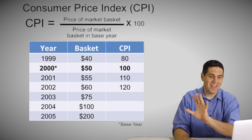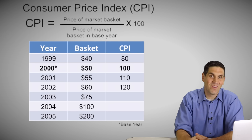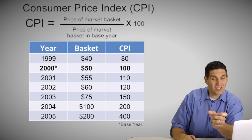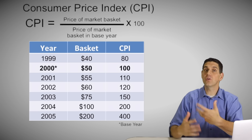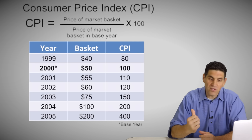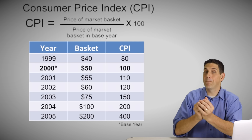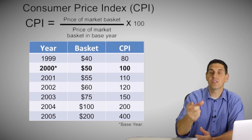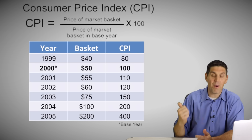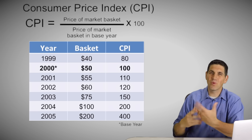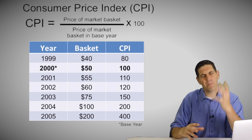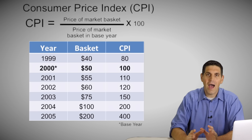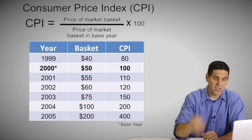These numbers are all made up — the inflation rate wasn't actually that high between those years. But now you understand how to calculate CPI. Check yourself to see if you got the right answers. You can either use the equation or use a bit of logic. For example, in 2004 the market basket is $100, but in the base year it was $50 — prices clearly doubled. So the CPI is going to be 200, and prices increased 100%. Either memorize the equation or use logic, but either way you can get the answer.